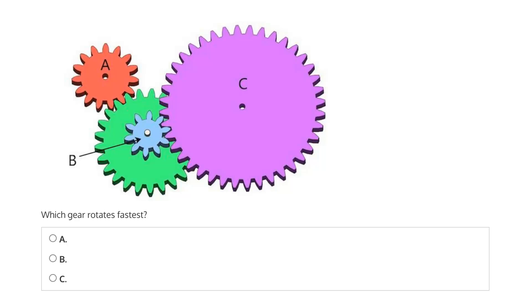This question says, which gear rotates fastest? Is it the red gear A, the blue gear B, or the purple gear C?